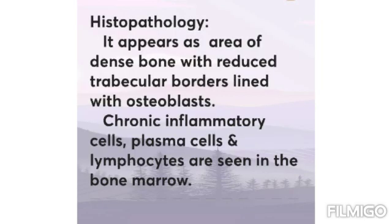Histopathology: it appears as an area of dense bone with reduced trabecular borders lined with osteoblasts. Chronic inflammatory cells, plasma cells, and lymphocytes are seen in the bone marrow.